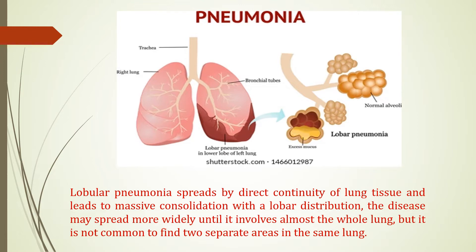The disease may spread more widely until it involves almost the whole lung, but it's not common to find two separate areas in the same lung. In this picture, you can see two lungs of the human body — the right lung and the left lung — and the left lung shows lobular pneumonia in the lower lobe.